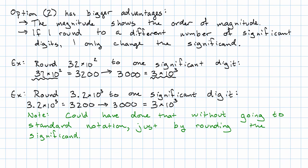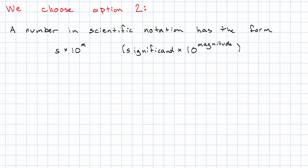And it turns out that that advantage is big enough that we choose option two to be our standard form for scientific notation. What does that mean? A number written in scientific notation has the form s times 10 to the power of the magnitude, where s is a number with one non-zero digit before the decimal point, and m, the magnitude, is an integer.